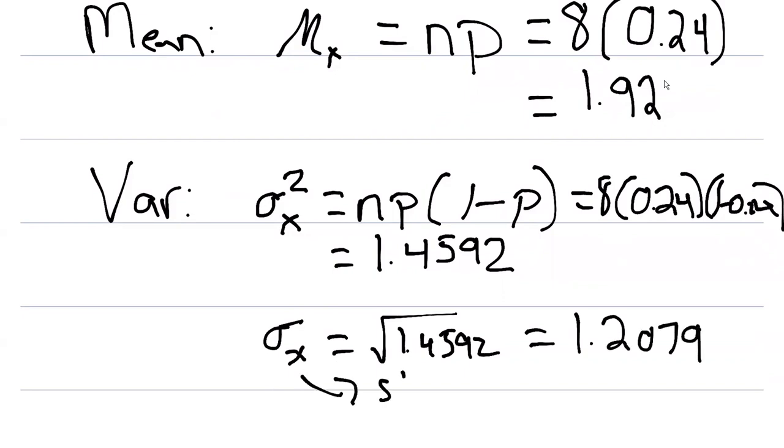So this, again, remember is the standard deviation. And so there you have it. The mean of the value, if we sample eight hazardous waste facilities, we would expect 1.92 facilities to be issued a violation with a standard deviation of 1.2079.